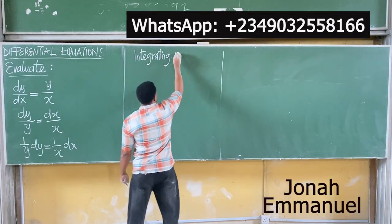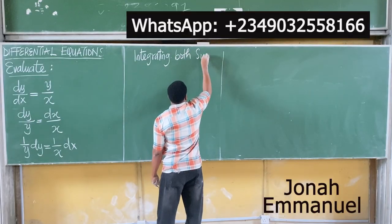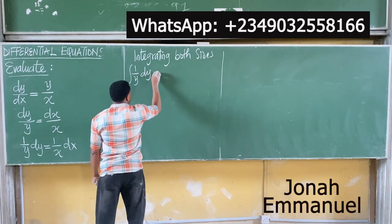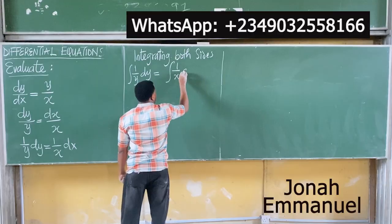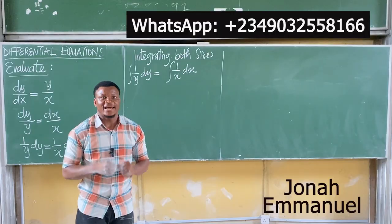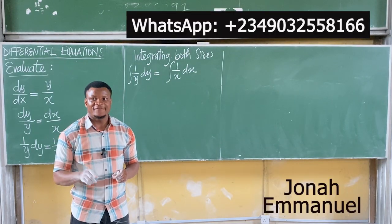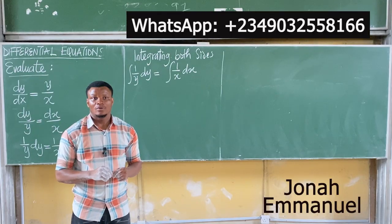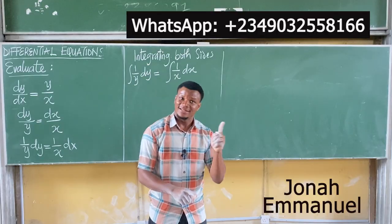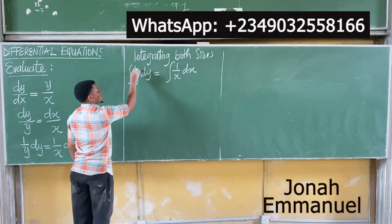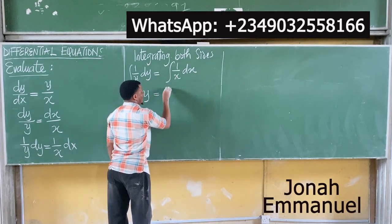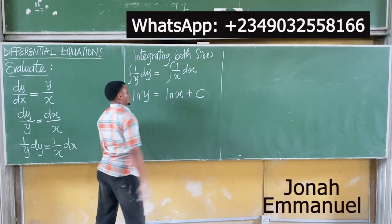Integrating both sides: the integral of one over y dy is equal to the integral of one over x dx. If I differentiate ln x, what do I get? One over x. So if I integrate one over x, I get ln x. In essence, integrating one over y gives ln y, and integrating one over x gives ln x plus c.